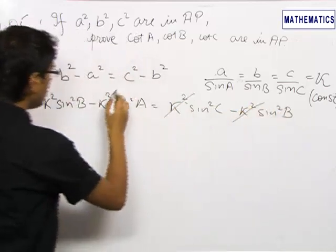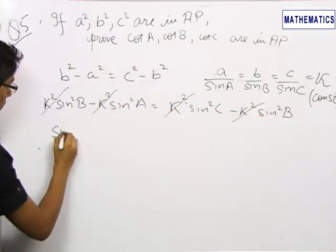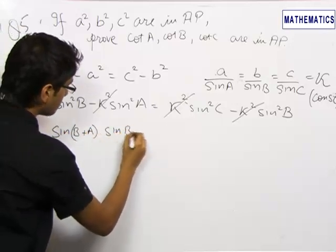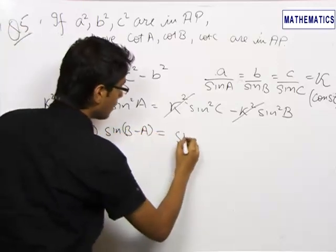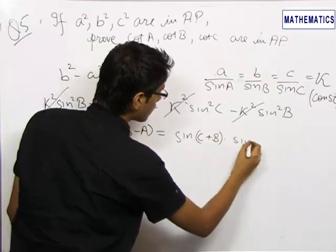This k square gets cancelled and we get the formula of sin square B minus sin square A, which is sin of B plus A into sin of B minus A. And over here, sin of C plus B into sin of C minus B.